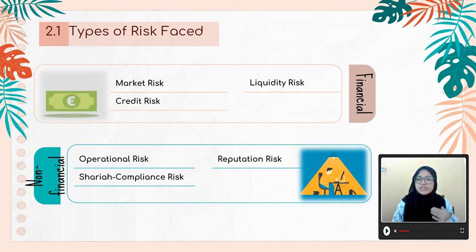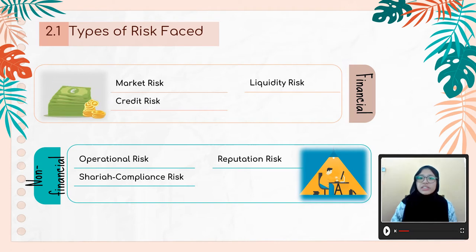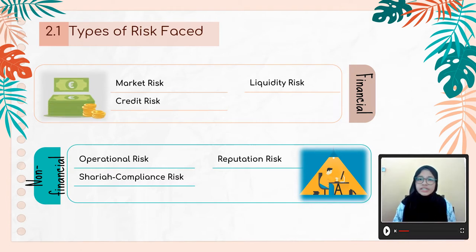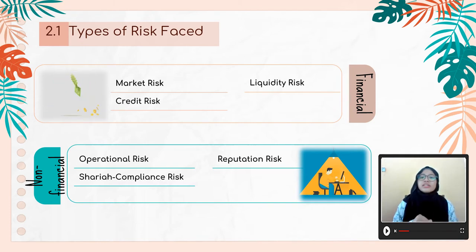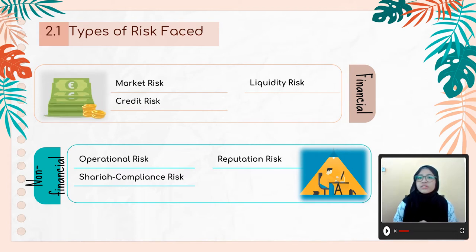Market risk is generally affected by changes in the price market. Credit risk appears due to the risk of a counterparty failing to recognize its obligation on time, and liquidity risk is related to the institution's cash flow. Operational risk may happen because of mankind and technical errors or accidents. Shariah compliance risk ensures the consistency of Shariah principles to prevent non-compliance. Reputation risk increases the risk of funds withdrawals and equity withdrawals from depositors and investors.